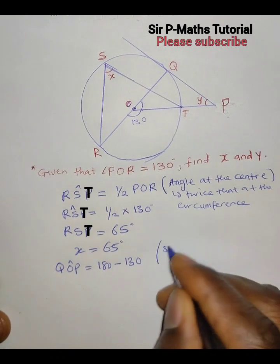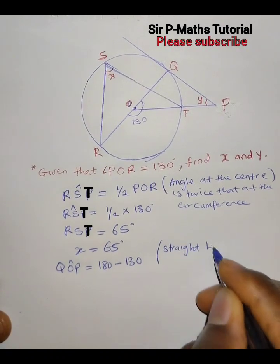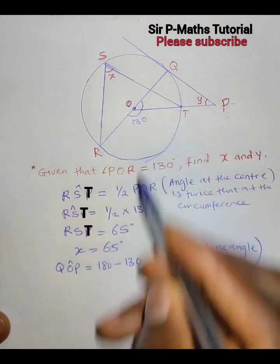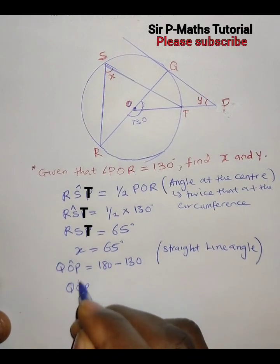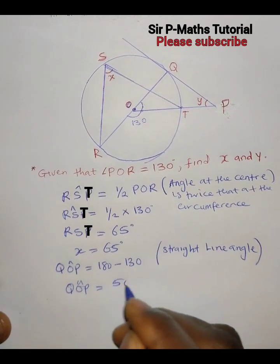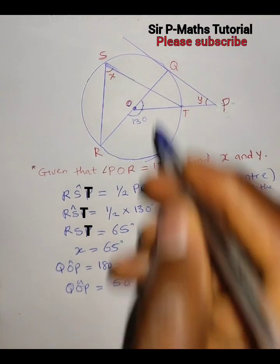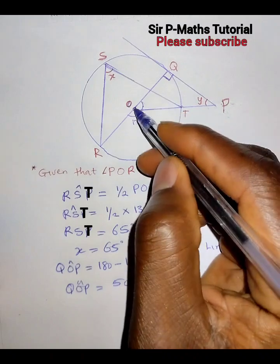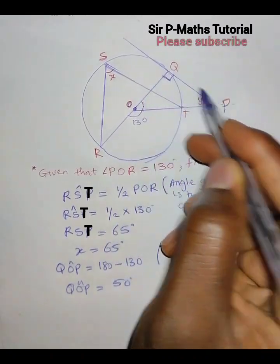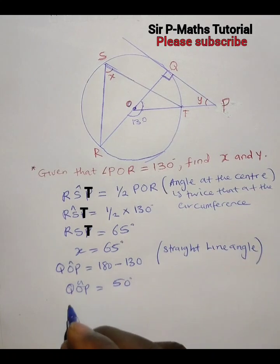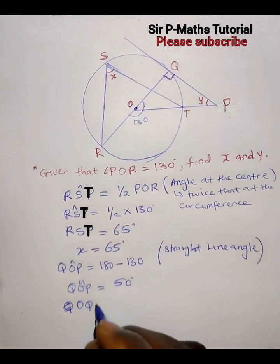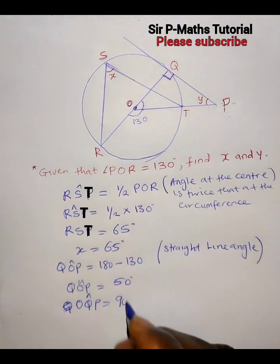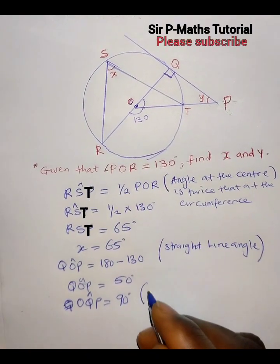The reason is angles on a straight line, therefore QOP equals 50 degrees. Also, the angle OQP here is 90 degrees because this line is perpendicular to the tangent — the reason being the radius meets the tangent at 90 degrees. So OQP equals 90 degrees.